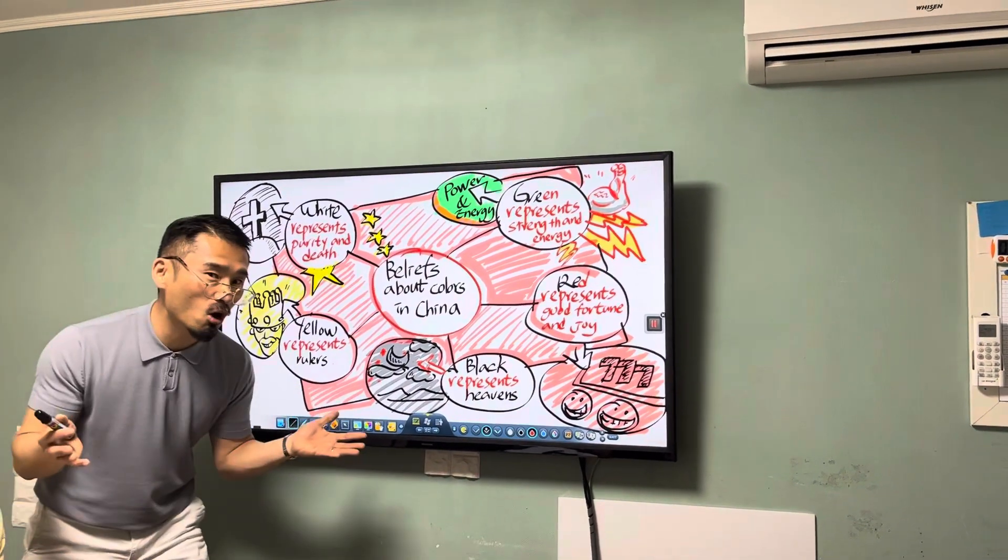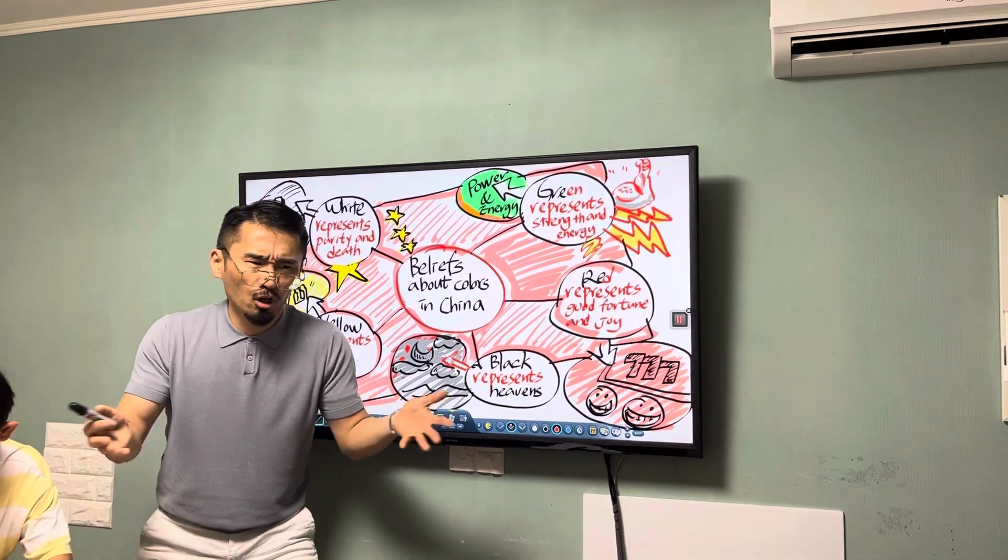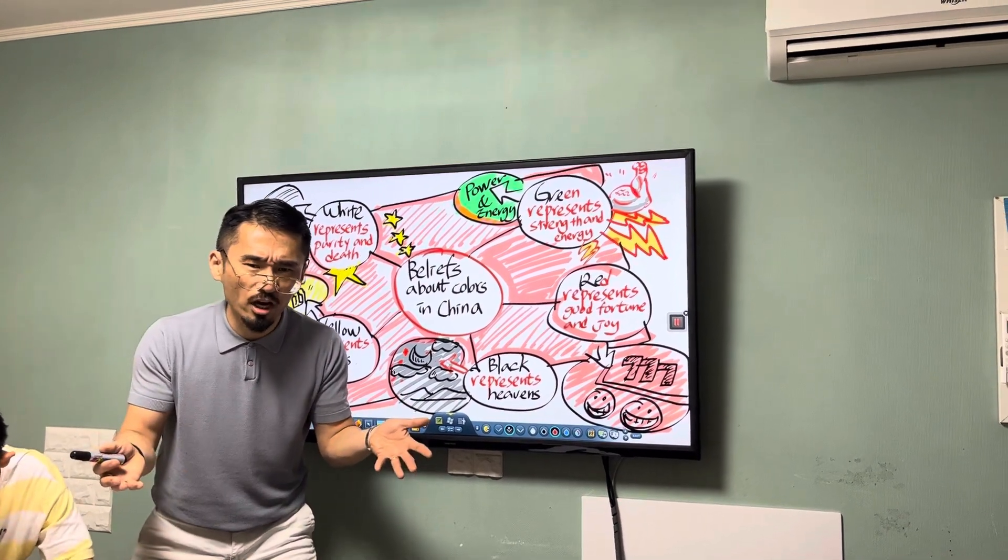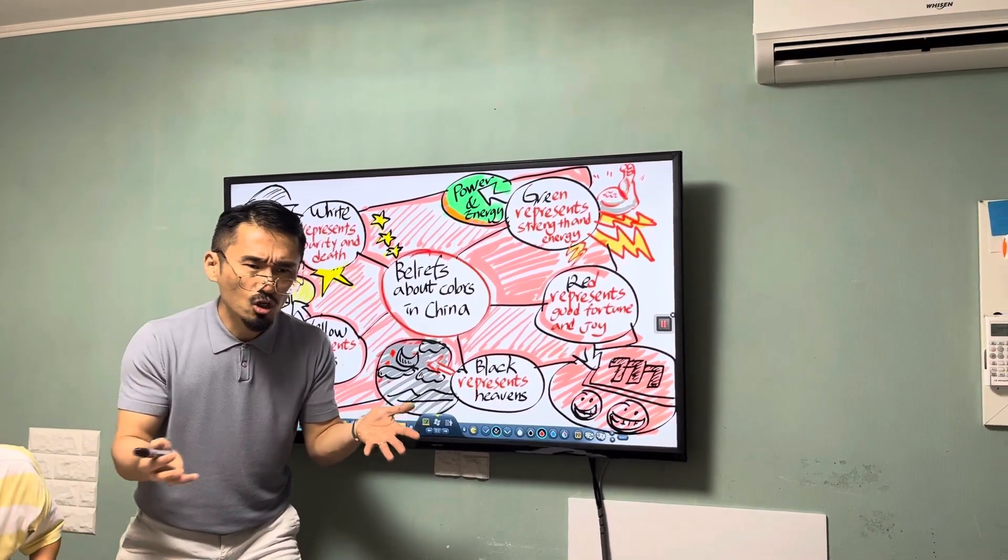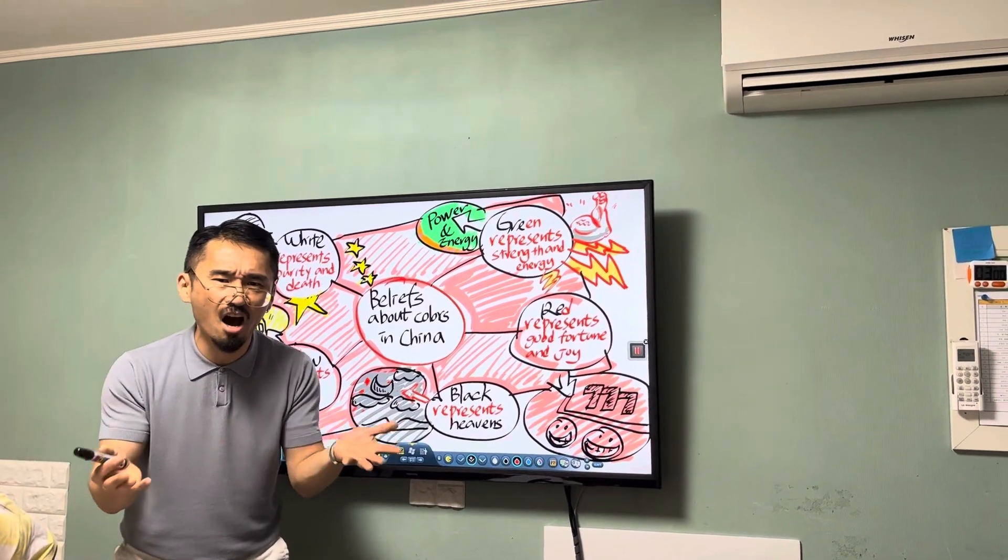Yellow represents the rulers of the earth. Most kings in the Qing dynasty lived under the yellow roofs of their castles.